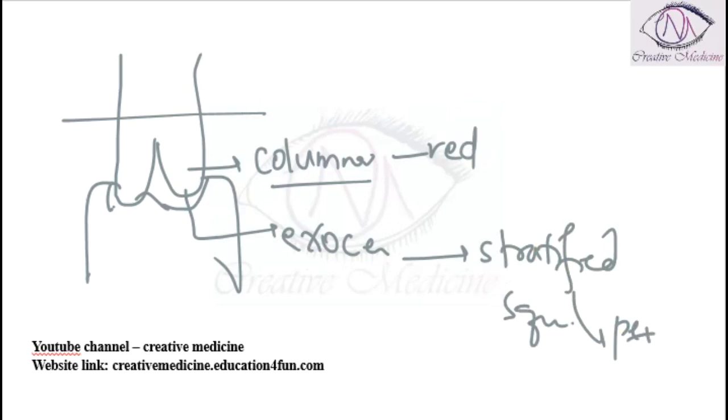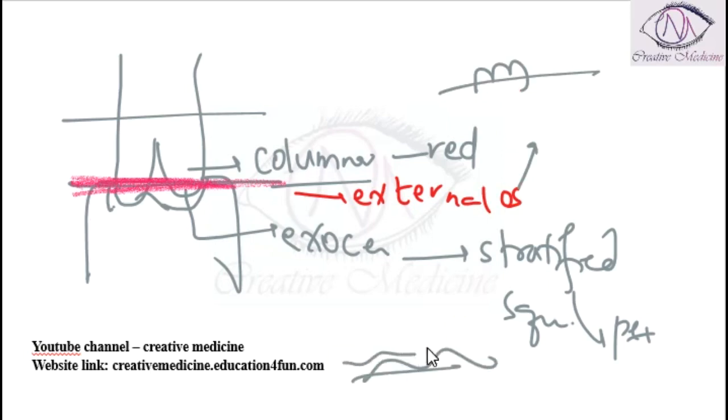The transformation zone originally is located at the level of the external os. It is a squamous columnar junction. The columnar epithelium of the endocervix converts into squamous epithelium of the exocervix, so this is a dynamic point.